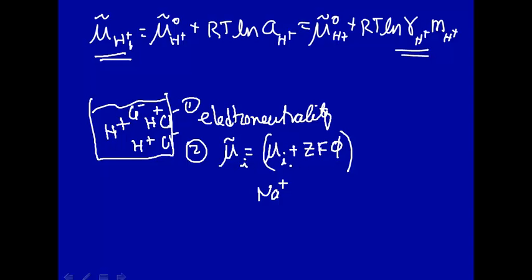It's arbitrary. You can easily, by convention, assign different amounts to there. And therefore, you can't talk about individual contributions to electrochemical potential.